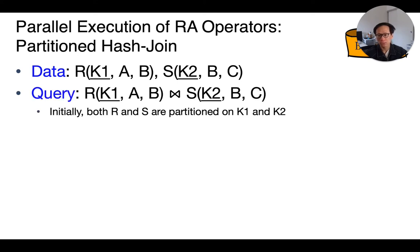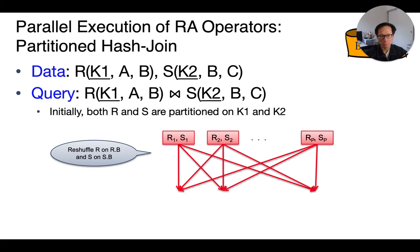In partitioned hash join, as you might remember, we initially assume that both relations are partitioned based on their keys. For instance, using a hash function to determine which machine to assign each of the tuples to. Then, in parallel hash join, we use a hash function to hash on the common attributes of both relations. In this case, B.